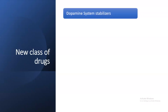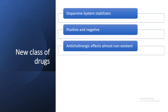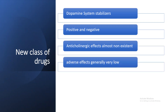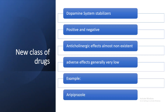A new class of drugs called dopamine system stabilizers are used for both positive and negative symptoms. They cause almost non-existent anticholinergic effects and have generally very low adverse effects. For example, aripiprazole is commonly used nowadays because of its very few side effects and effectiveness for both positive and negative symptoms.